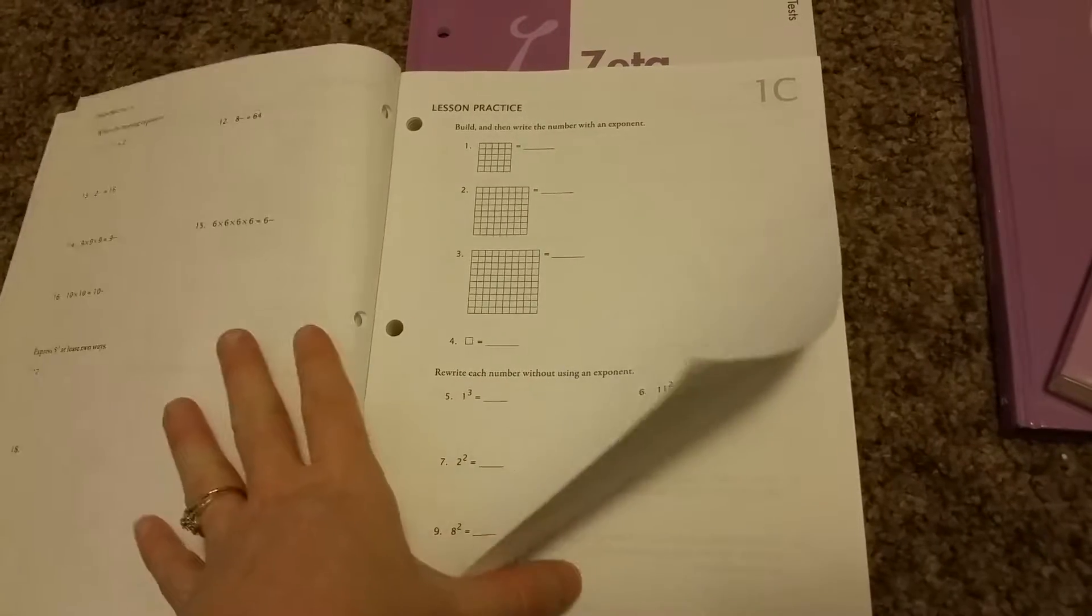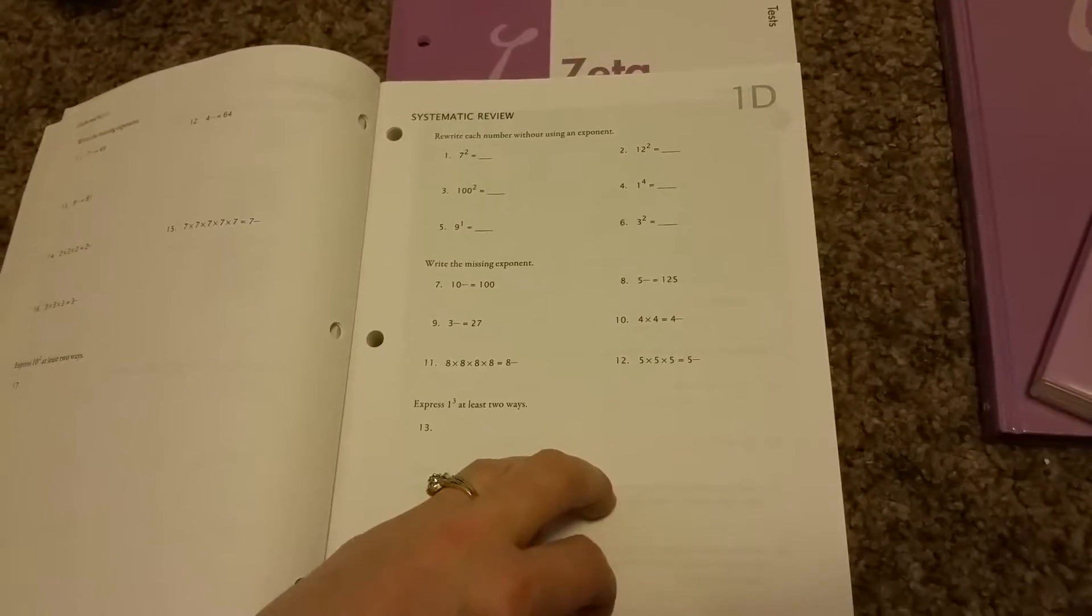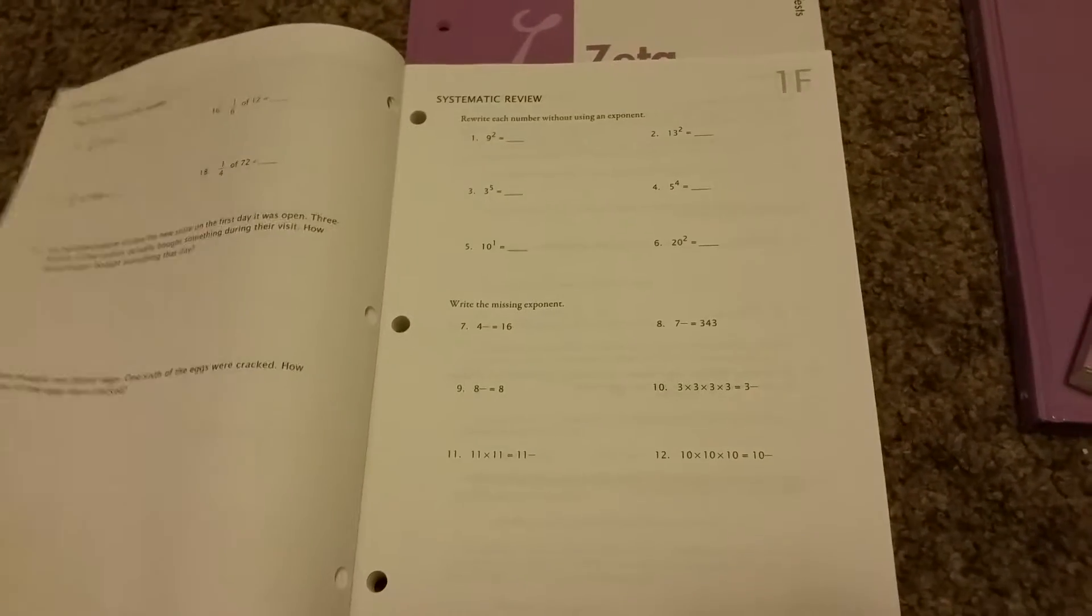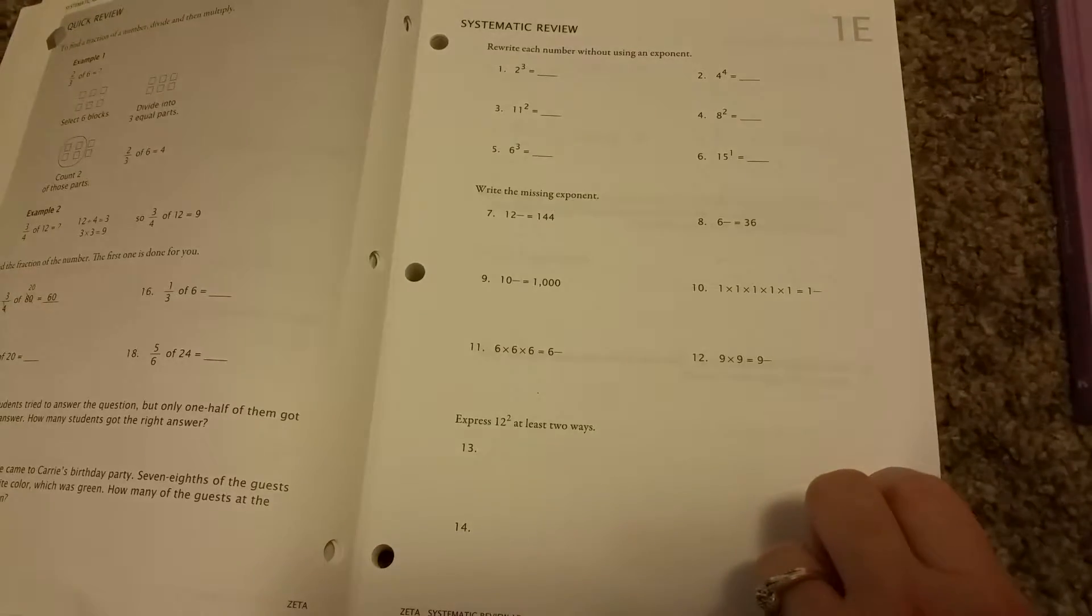And then you do however many you want. And then the next day, you have D, E, and F for review. So what you've just learned plus everything else, and it ties it all in together.